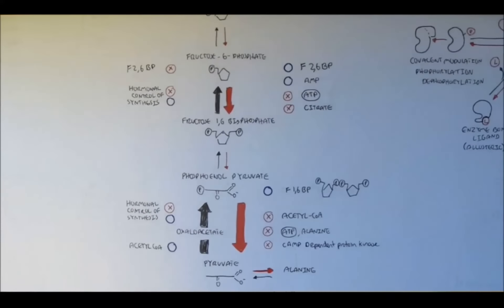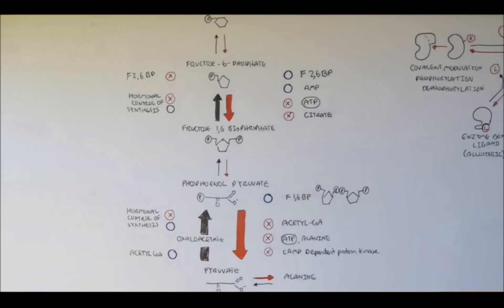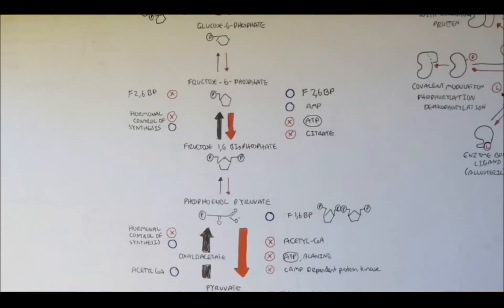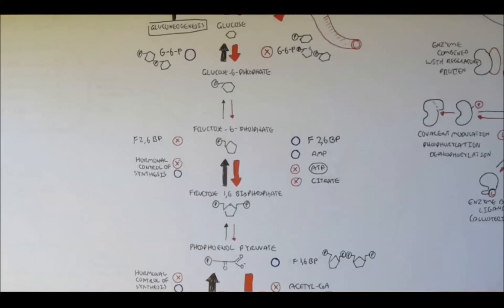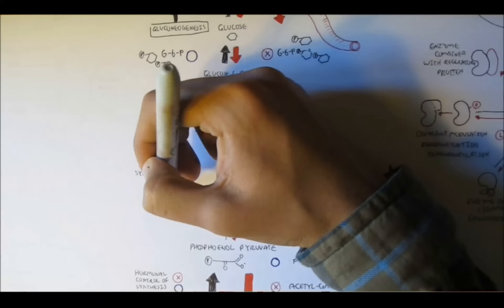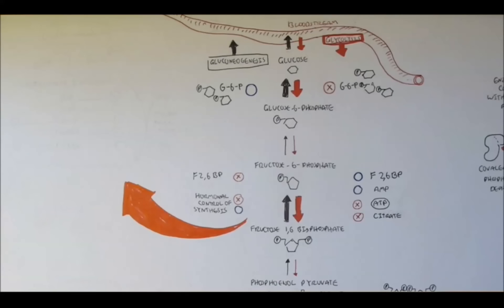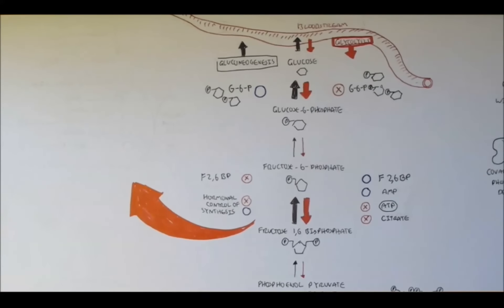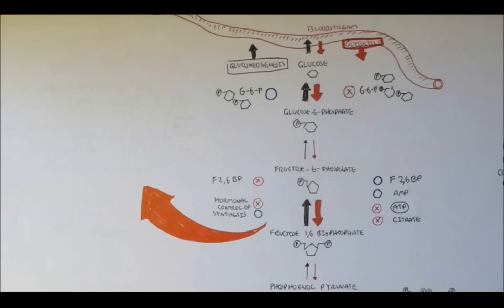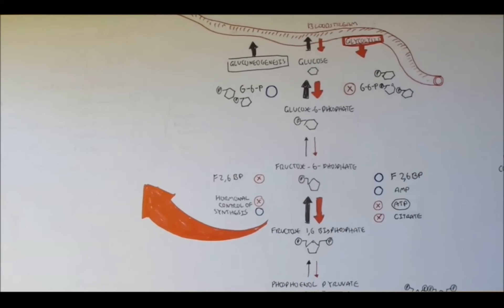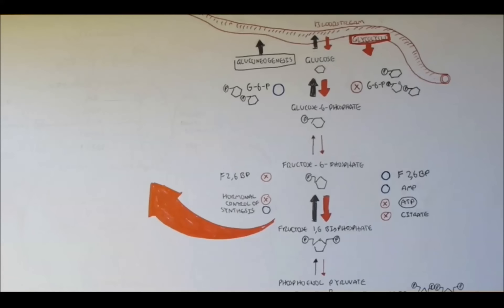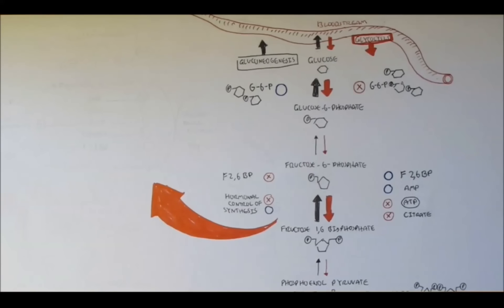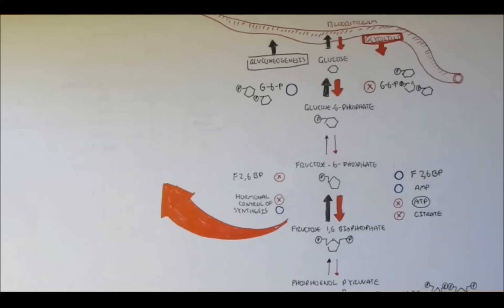I hope you understood that — sorry if you got confused because I didn't write the enzymes down, but it is important to remember the enzymes in each of these three main reactions. We'll have a closer look at the hormonal control between fructose-6-phosphate and fructose-1,6-bisphosphate, because it is here where fructose-2,6-bisphosphate plays a critical role. Thank you for watching — please like, comment, and subscribe.